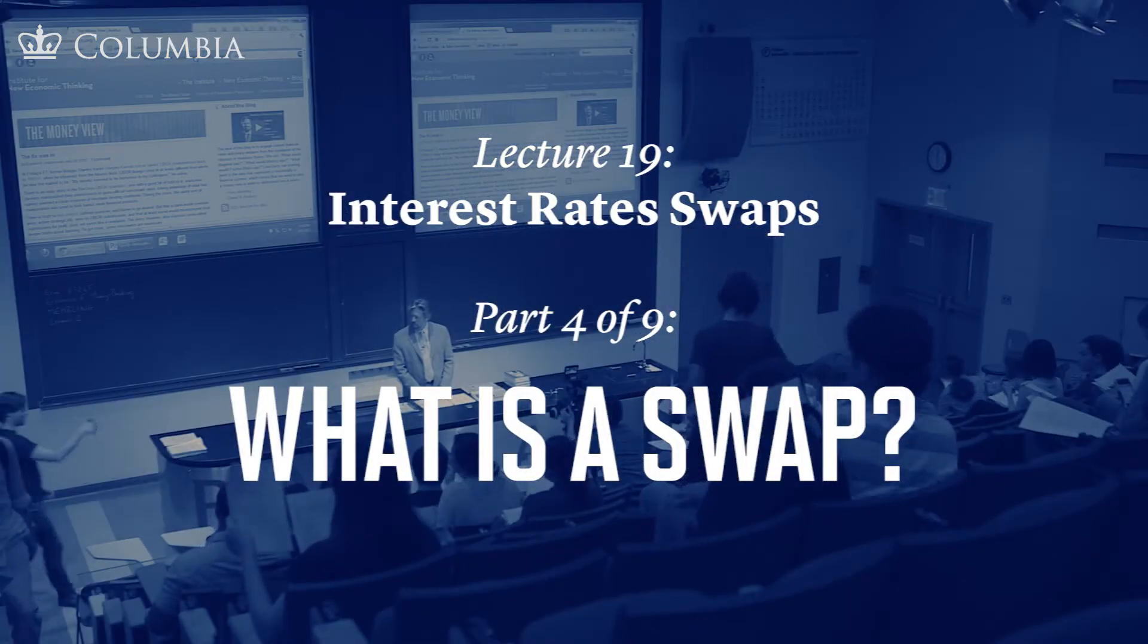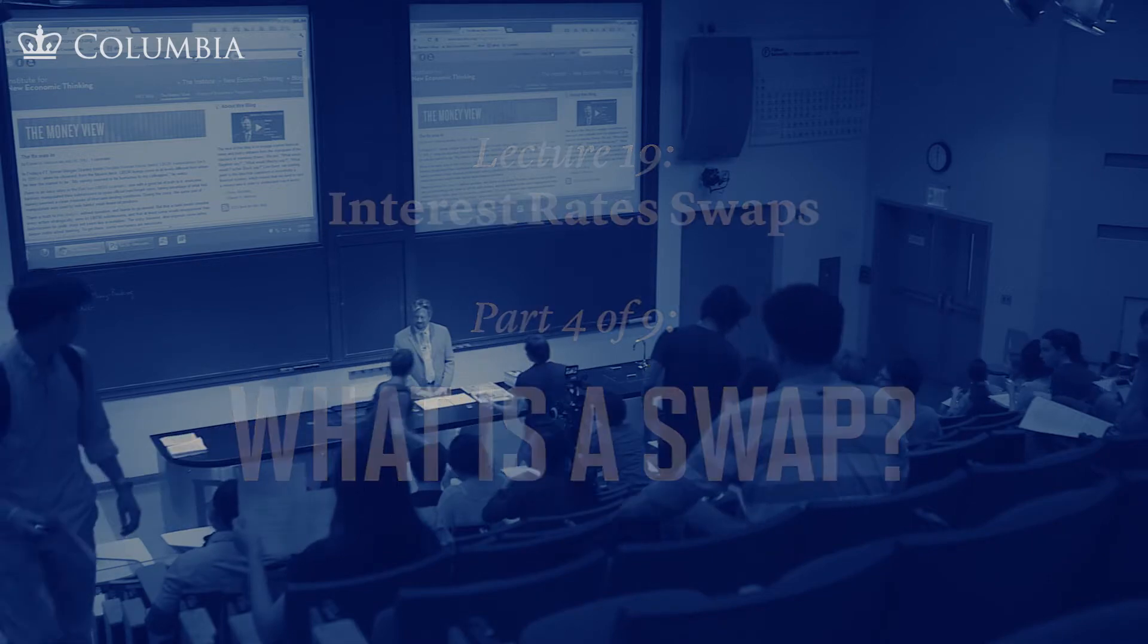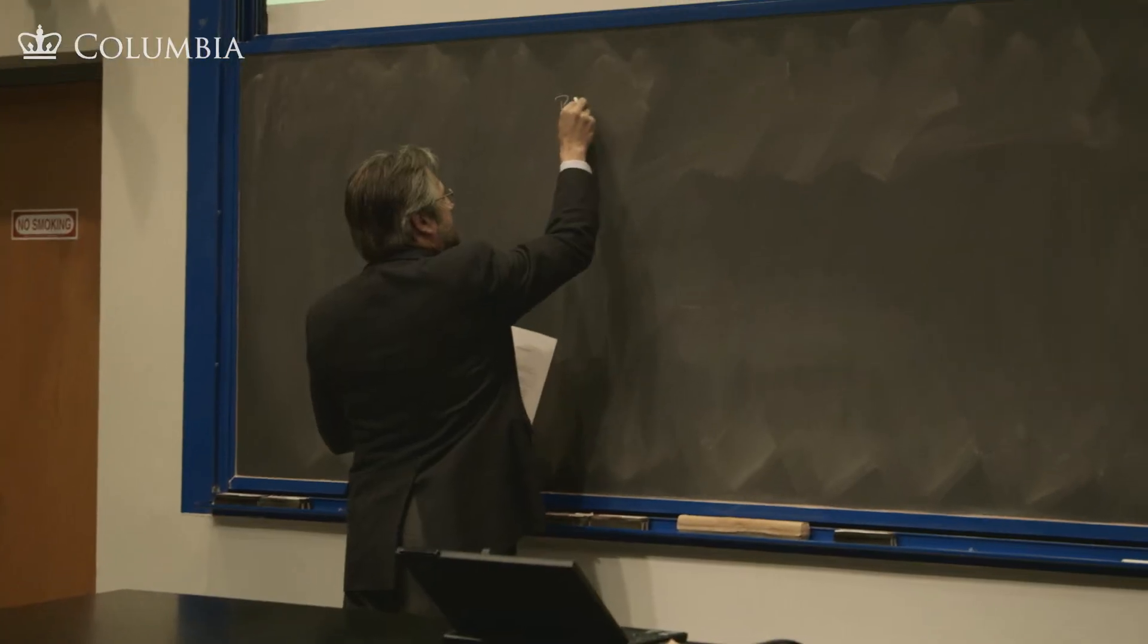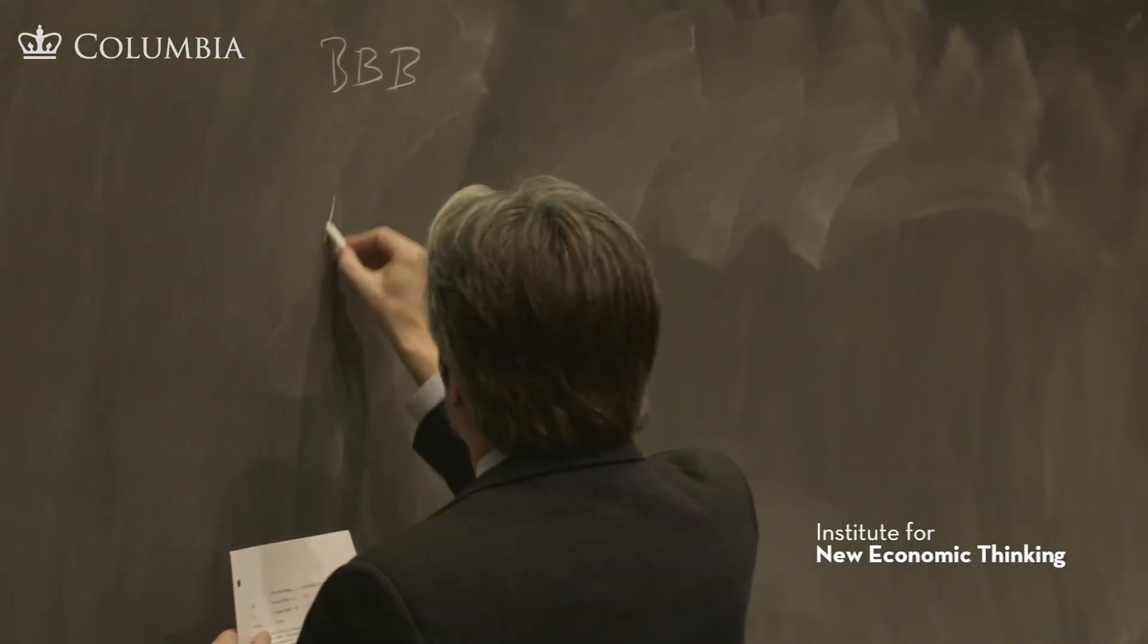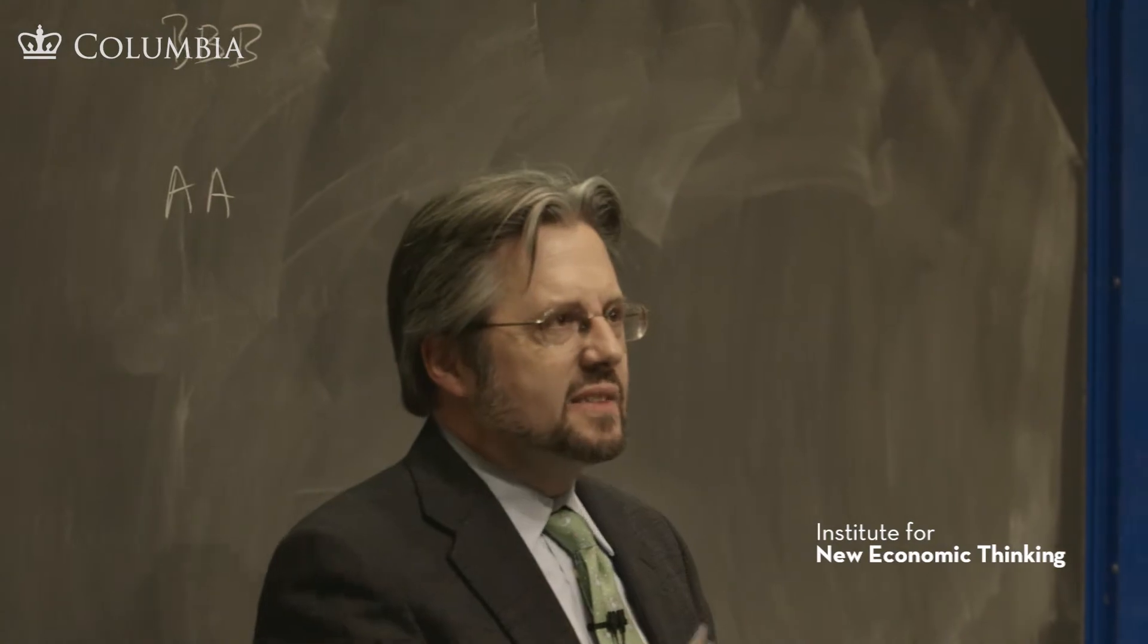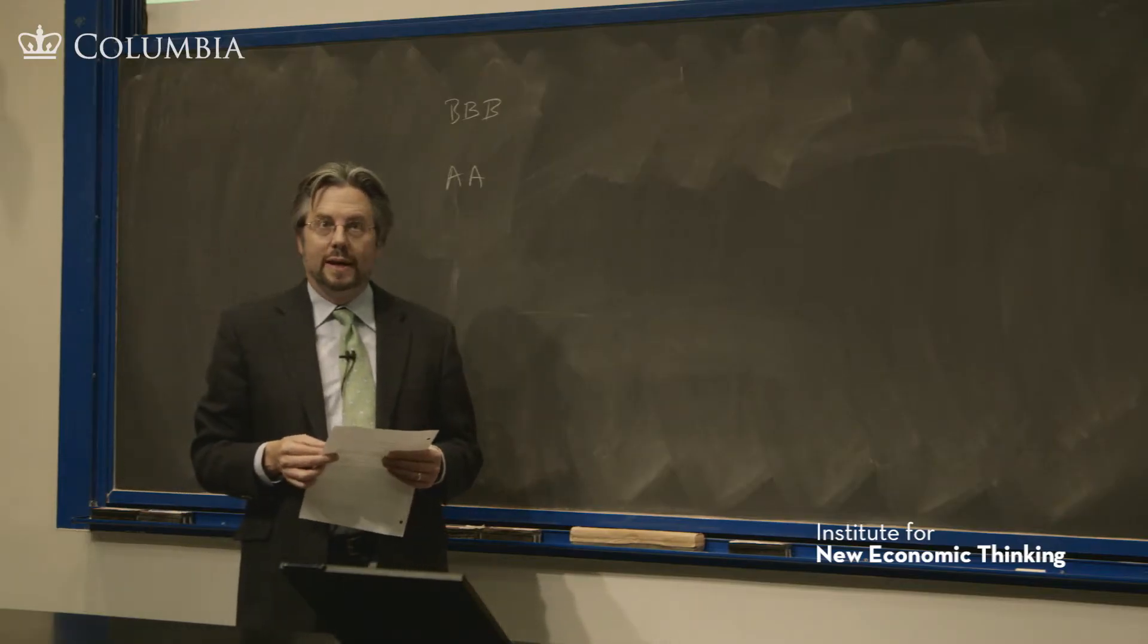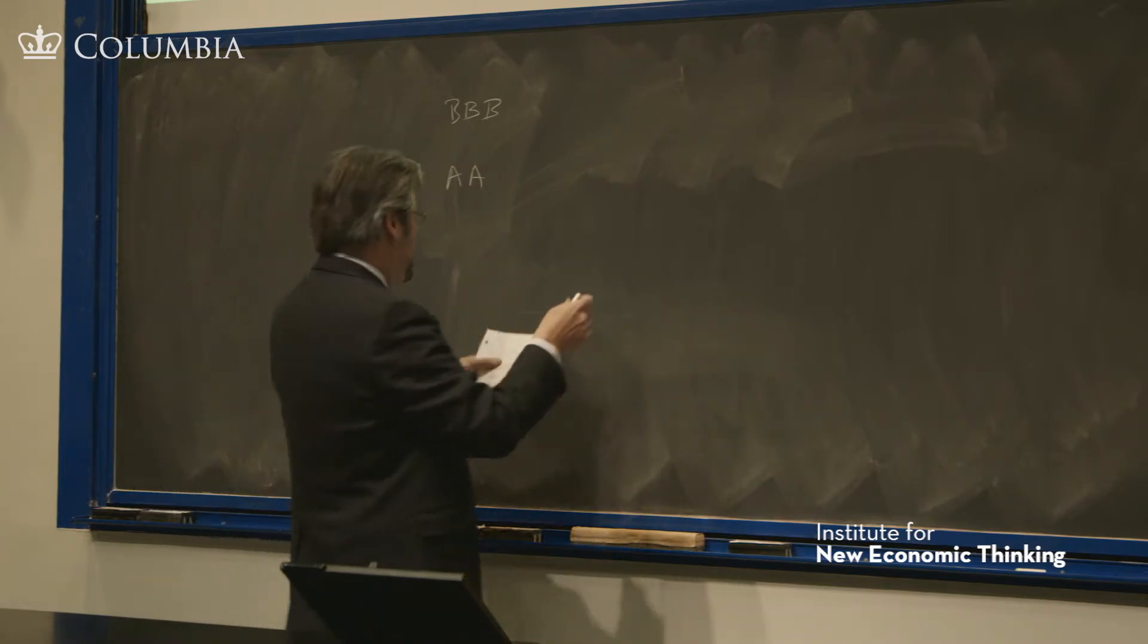Stigum gives some concrete numbers to motivate this. She says that Triple B and Double A both go into the market and ask their bankers what will you charge for a floating rate loan? What will you charge for a fixed rate loan? And they receive the following information.